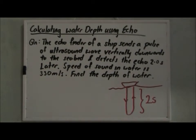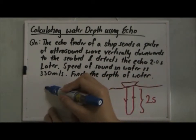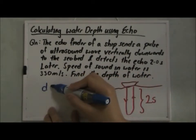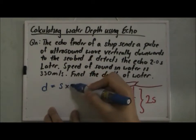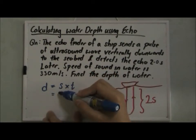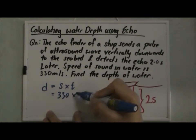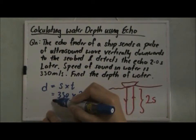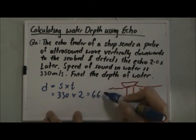To deal with this question, we can find the distance traveled by the wave. It's equal to speed times time. The speed is 330 and the time taken is 2 seconds. So this gives us 660 meters.